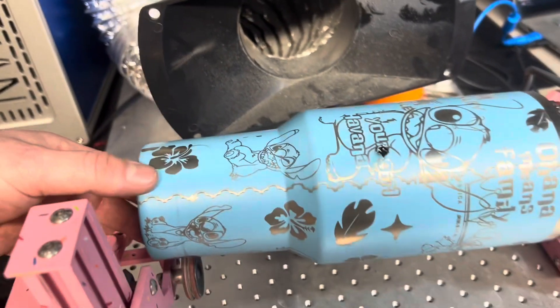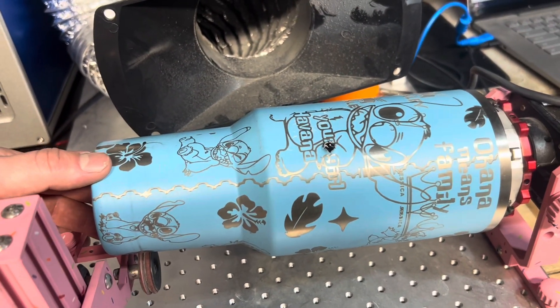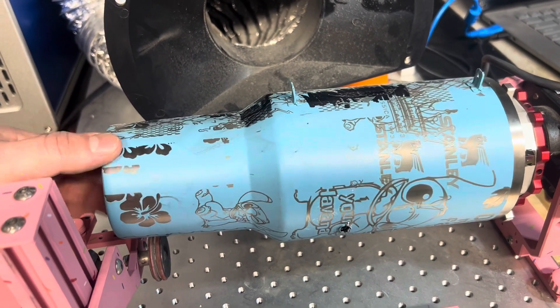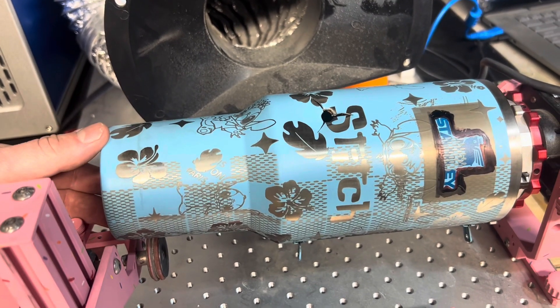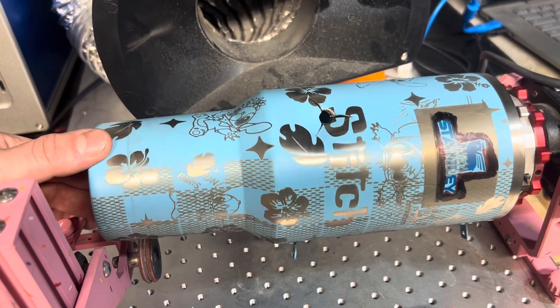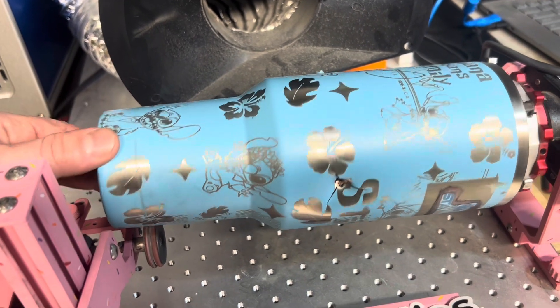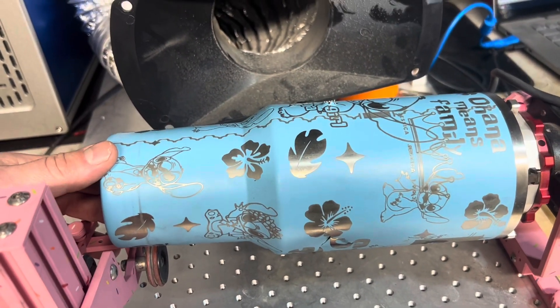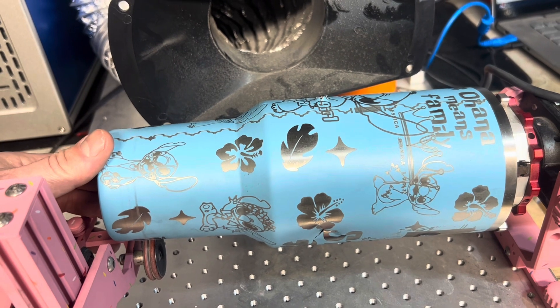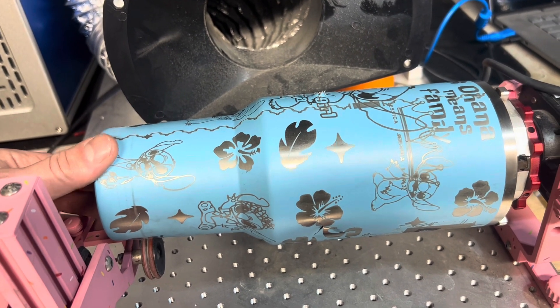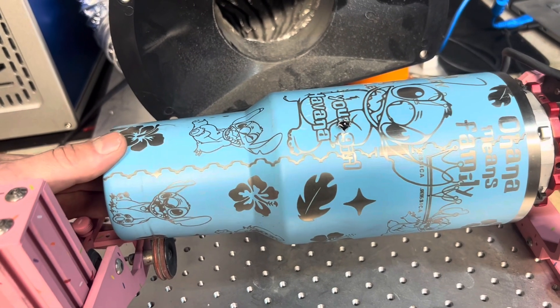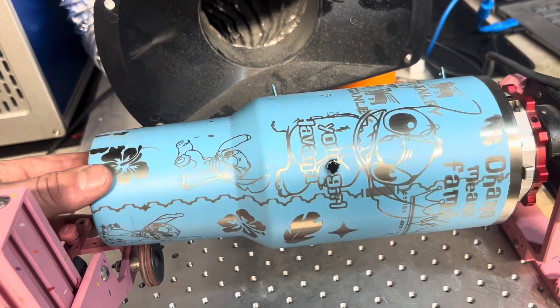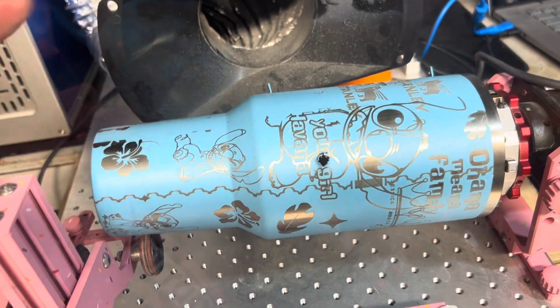So basically what split size is, is how many times or the distance that it's going to turn. Whereas on a gantry machine, the cup is always turning. So on a galvo style machine with a split size, it's going to rotate, laser all it needs to laser, rotate again, laser all it needs to laser, rotate again, and do that until it's finished.